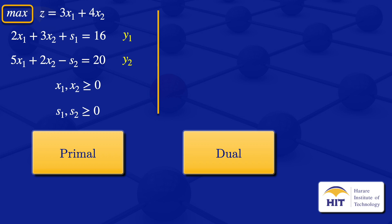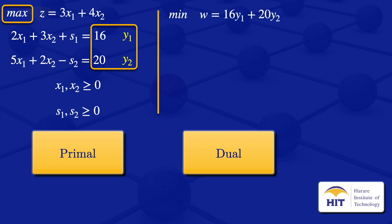To get the coefficients of the objective function of the dual, we look at the right-hand side of these equations, which gives us 16 and 20. So the dual objective function is: minimize w equals 16y1 plus 20y2.